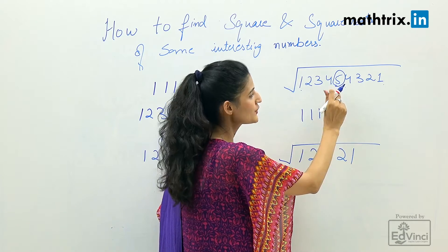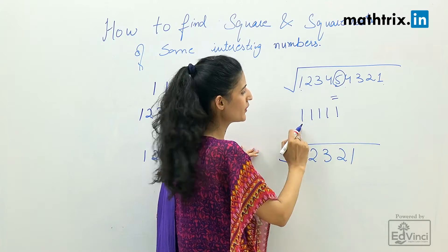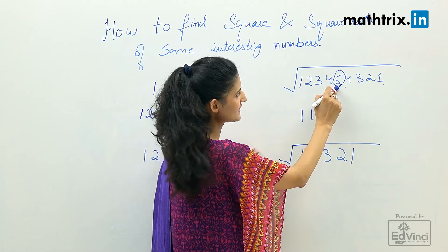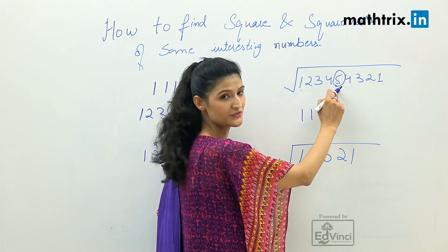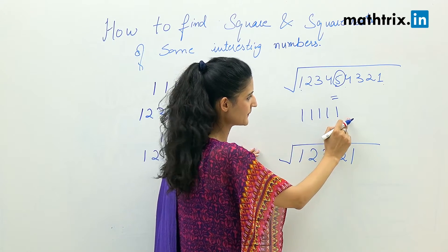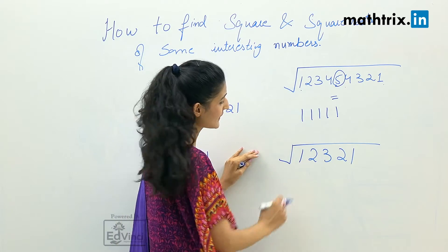It is starting with one, it is going till five, and after that it is descending. So we have to write five ones here. The biggest digit we have when we are ascending is five, so we'll write five ones here.